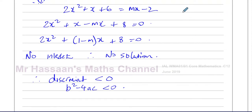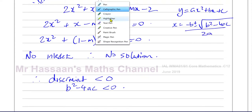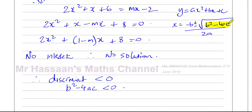When you have a quadratic of the form Y equals AX squared plus BX plus C and solve it using the quadratic formula — minus B plus or minus the square root of B squared minus 4AC over 2A — if the part under the square root becomes negative, there will be no solution, because you'd have the square root of a negative number, which is undefined.